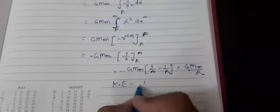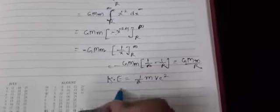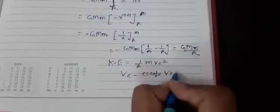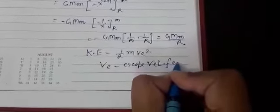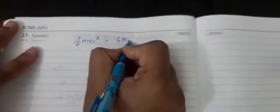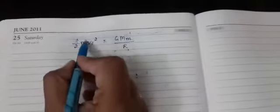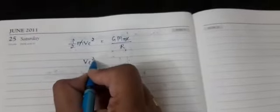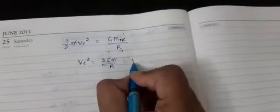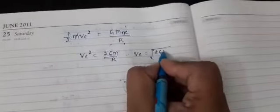The body requires kinetic energy equal to ½mVe², where Ve is the escape velocity of earth. Since this kinetic energy is provided by the work done against gravity, equating the two gives Ve = √(2GM/R).